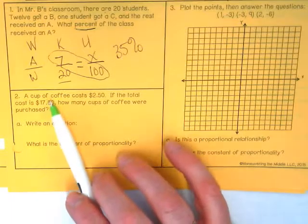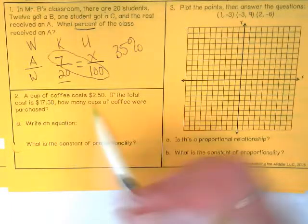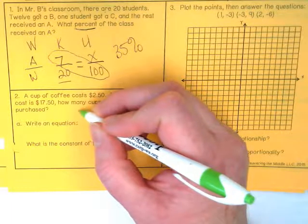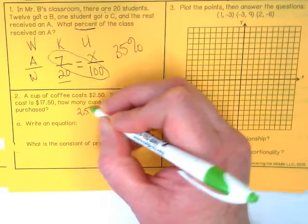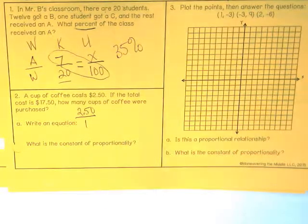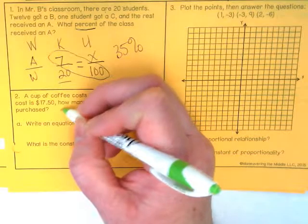Okay, for question two: a cup of coffee costs two dollars and fifty cents. To set this up as a unit rate, we have two dollars and fifty cents for one cup. So what's our word ratio? It's dollars over cups of coffee.